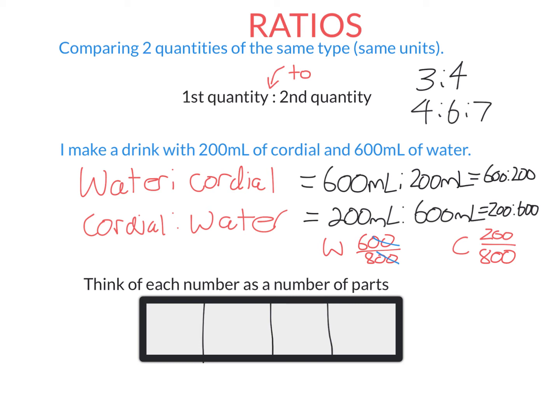6 over 8 simplifies to 3 over 4. Three quarters of this drink is water, and similarly, 200 over 800 is 1 quarter. So this is a drink with 3 quarters water and 1 quarter cordial.